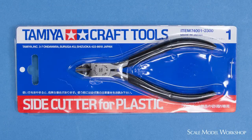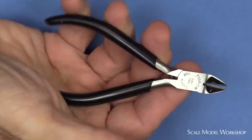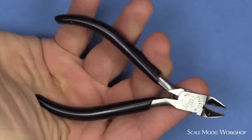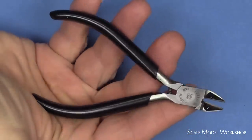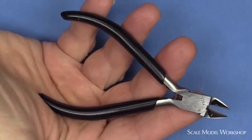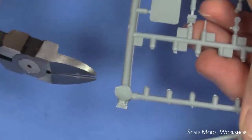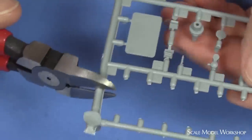First up is the Tamiya 74001 All-Around Side Cutter. It's the most stout of all the nippers that I'm showing, and more capable of cutting through the surrounding sprue material, but again, if you're cutting through really thick stuff, you reach for a larger pair of sprue cutters.